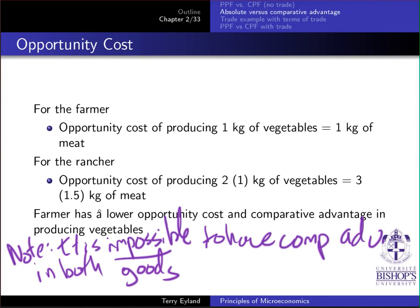In practice, except for that extremely rare scenario where ratios are identical, it is impossible for one producer to have comparative advantage in both goods. Therefore, one producer will have comparative advantage in one good and the other producer in the other. So if you are confident in your answer for one good, you likely know the answer for the other — if the rancher has comparative advantage in meat, the farmer has comparative advantage in vegetables.